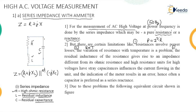There is another problem: residual inductance and stray capacitance. These two parameters influence the current passing through the unit. This residual inductance gives rise to an impedance different from its ohmic resistance, and high resistance units for high voltages have stray capacitances. The effect is that the indication of the meter results in an error — we will not get a proper reading.